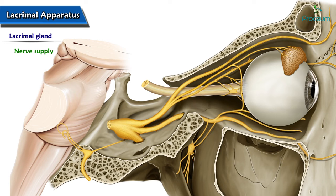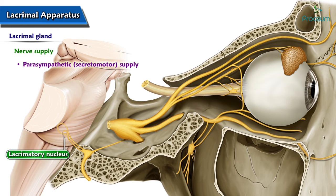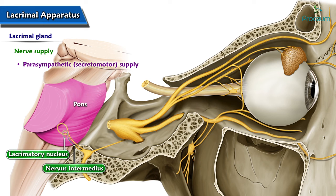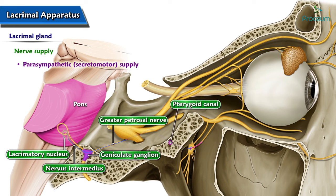Nerve supply of the lacrimal gland — parasympathetic secretomotor supply: the preganglionic parasympathetic fibers arise from the lacrimatory nucleus in the pons, pass through the nervus intermedius, reach the geniculate ganglion, then travel via the greater petrosal nerve and the nerve of the pterygoid canal to reach the pterygopalatine ganglion, where they relay.